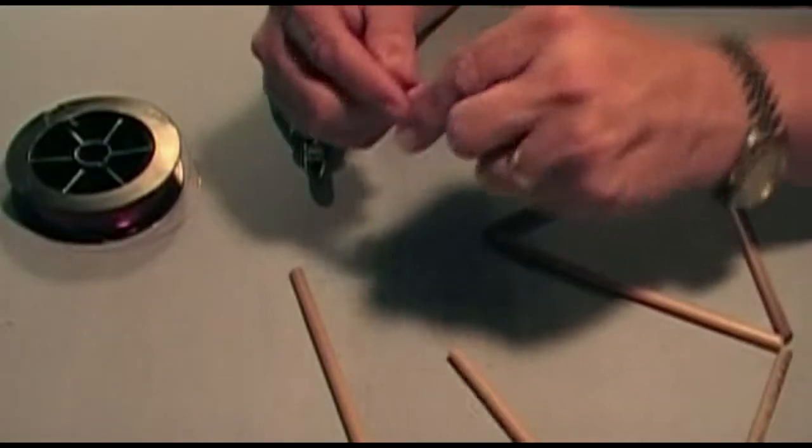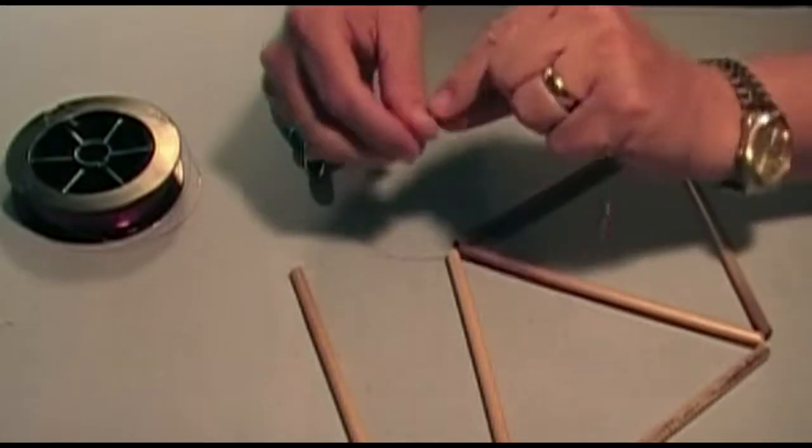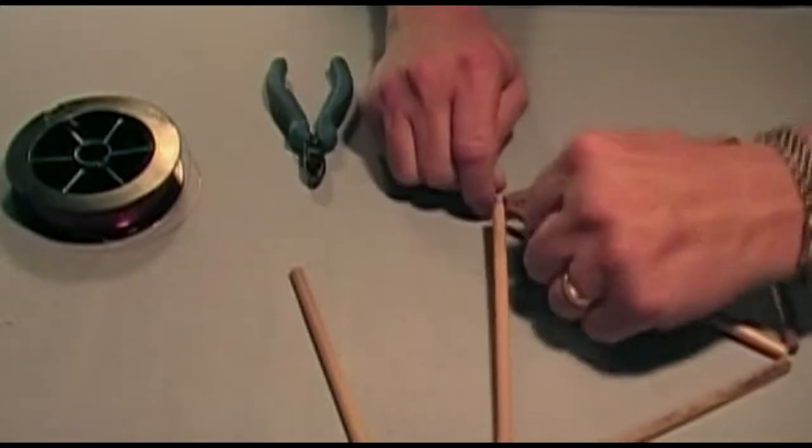We make an overhand or granny knot, careful to pull the knot very tight with the second loop or throw of the knot.